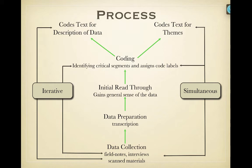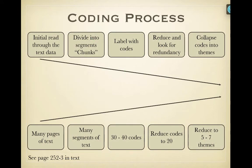We say again that this is iterative, meaning that we go through the process over and over again. You're constantly collecting data until you feel like you've had enough. Then you interpret that data, you start to develop themes, and you collapse codes together to make themes. You try different themes and you keep going through that process over and over again until you've come up with the themes that you think will describe the phenomenon.